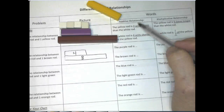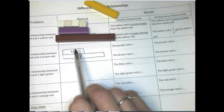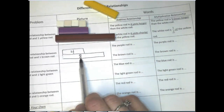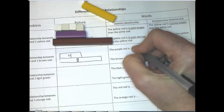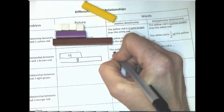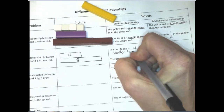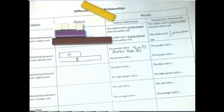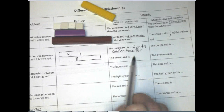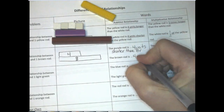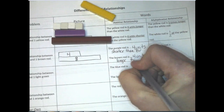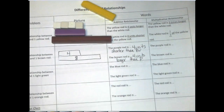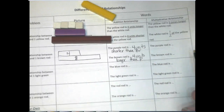For the purple rod, if I want to talk about additive, I would talk about how many more units it takes to make eight. The purple rod is shorter, so the purple rod is four units shorter than the brown. The brown rod is four units longer than the purple. That's talking about how many units shorter or longer something is — that's additive. You've probably been doing that since kindergarten.